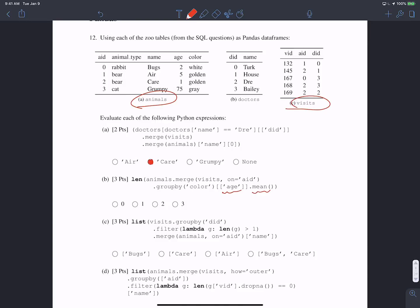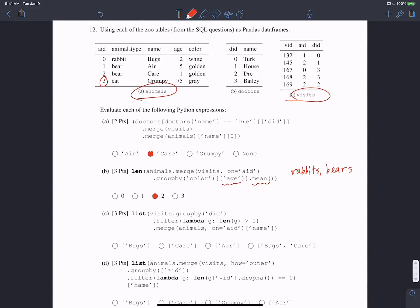Our output will only contain one row for each type of animal that actually went to the doctor. Notice animal ID 3 never appears in the visits table, meaning that no cat ever went to the doctor. So the only types of animals that went to the doctor were rabbits and bears, therefore the length of this resulting table will be two.